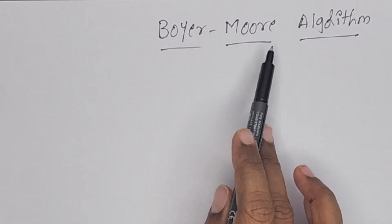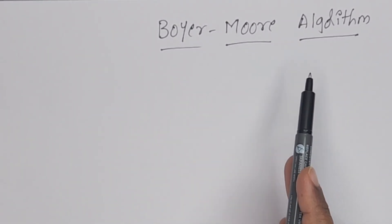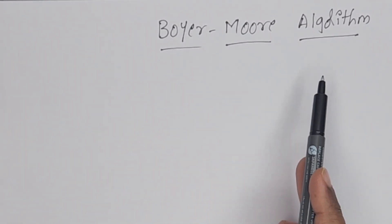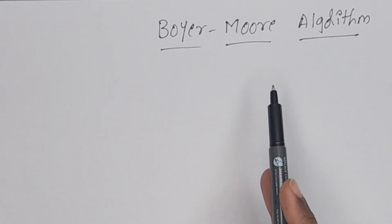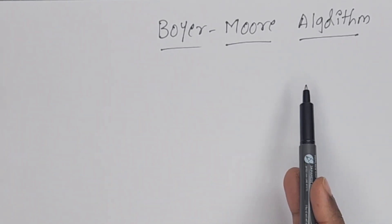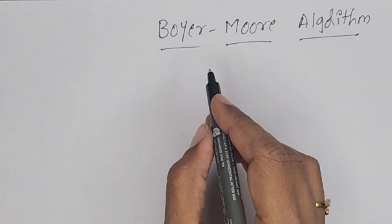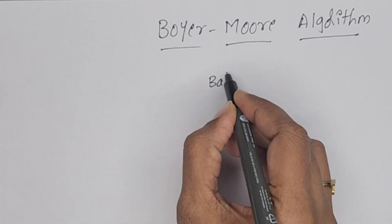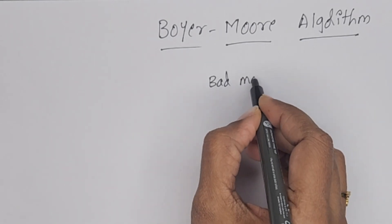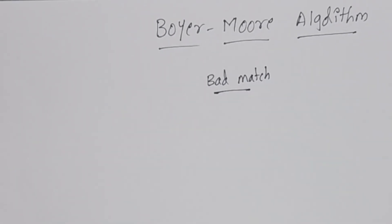The topic is the Boyer-Moore algorithm. This is one more pattern matching algorithm. In previous examples, I have explained the basic algorithm and the KMP algorithm. Now, in this algorithm, first of all, we have to prepare a bad match table for the pattern. I will show you how to prepare a bad match table.